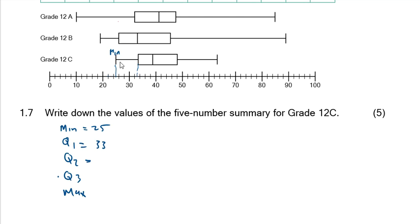Q2, the median — remember Q1 is here and Q2 is there — going down the number line, it's between 38 and 40, so it must be 39. Q3, going down, is exactly at 48. And finally, the maximum — going down the box and whisker plot and drawing a straight line — it's between 62 and 64, therefore it's 63. So the five-number summary for 12c is: 25, 33, 39, 48, 63.